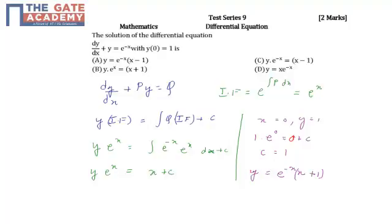So we have the final equation as y is equal to e raised to minus x times x plus 1. Yes, that is nothing but option b.